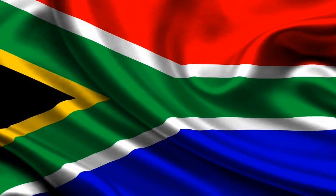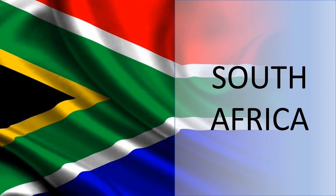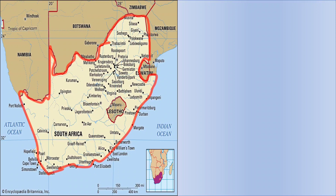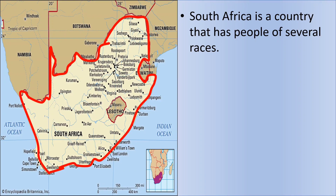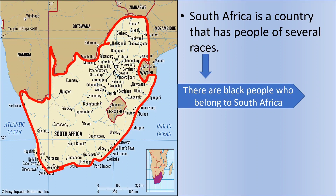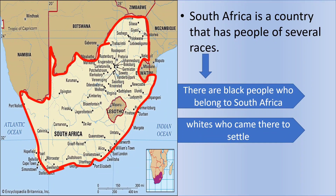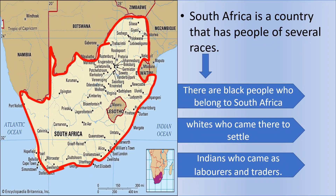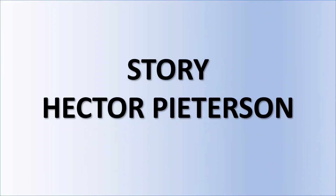Before starting, let us see a short story about South Africa. South Africa is a country which has people of several races. There are black people who originally belong to South Africa — the natives. Then there are white people who came and settled there, and there are Indian people who came as laborers and traders. This is what makes South Africa diverse in terms of races. Now let us see the story of Hector Peterson from your textbook.